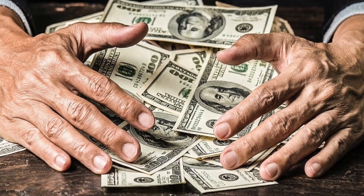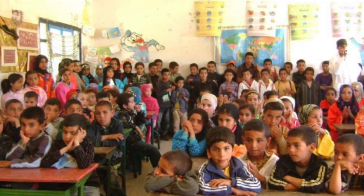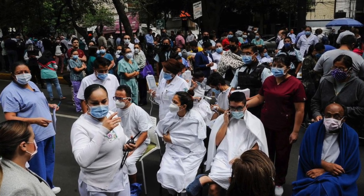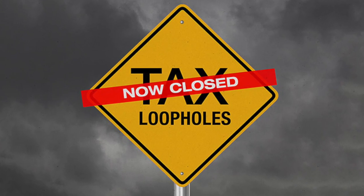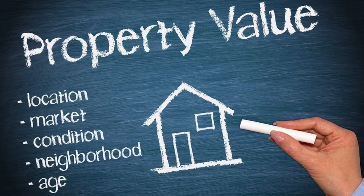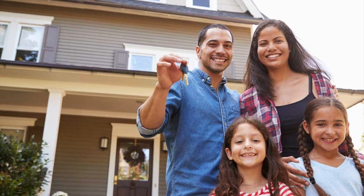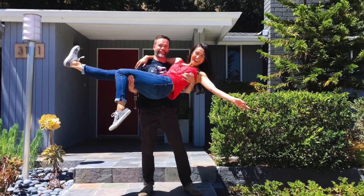While the wealthiest corporations avoid paying their fair share, our schools have the most crowded classrooms in the nation and our local communities are struggling to respond to the impact of COVID-19. Wealthy corporations avoid reassessment by employing highly paid tax lawyers and accountants to exploit loopholes. Prop 15 closes those loopholes by requiring non-residential properties to be assessed at their actual fair market value. The top 10 percent of California's most valuable non-residential commercial properties account for 92 percent of Prop 15's new revenues. It does not impact homeowners and renters — Prop 15 exempts all residential properties, maintaining full Prop 13 protections.